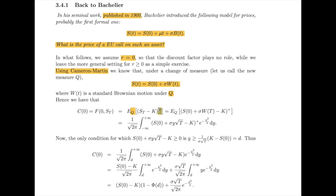Now, until here, nothing changes with respect to the standard framework, given that we are assuming r to be equal to zero, so the risk-free rate is equal to zero. What we need to do is just substitute the value for S_T following the process defined under the risk-neutral measure, and we can immediately write down everything as the integral you see on your screen. Given the standard Brownian motion Wt under the measure Q, this can be written in terms of a density of a normally distributed random variable. So the quantity sigma Wt can be substituted with sigma y times the square root of t, and we take into consideration the density of our standard normal, that is to say the term exponential of minus y squared over 2.